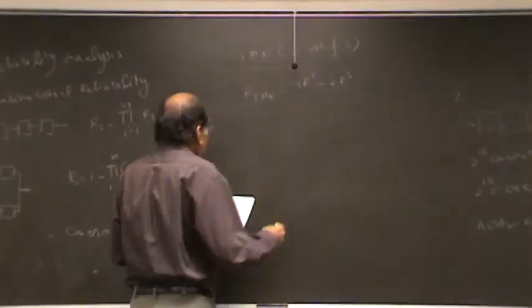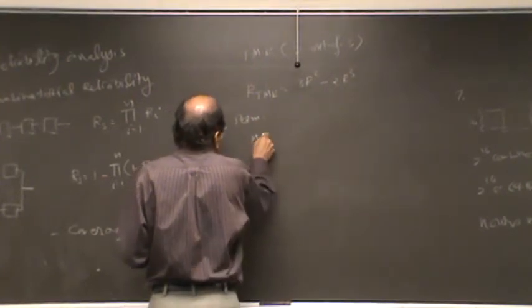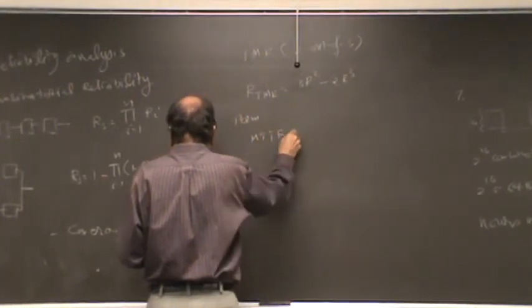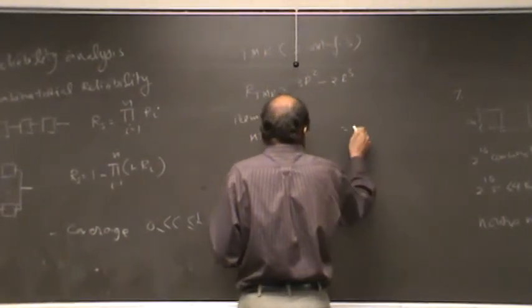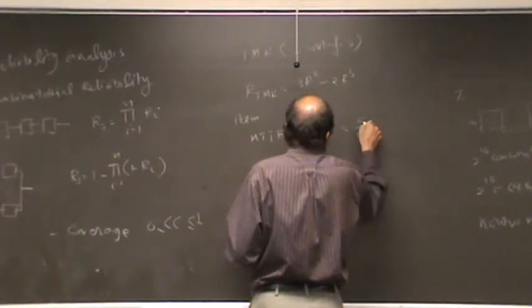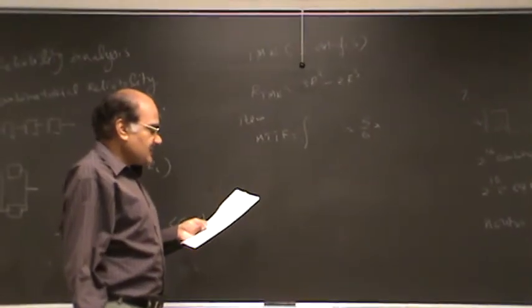For permanent failures, we saw that MTTF comes out to be 5 by 6 lambda, which is actually slightly less than MTTF of a single unit.